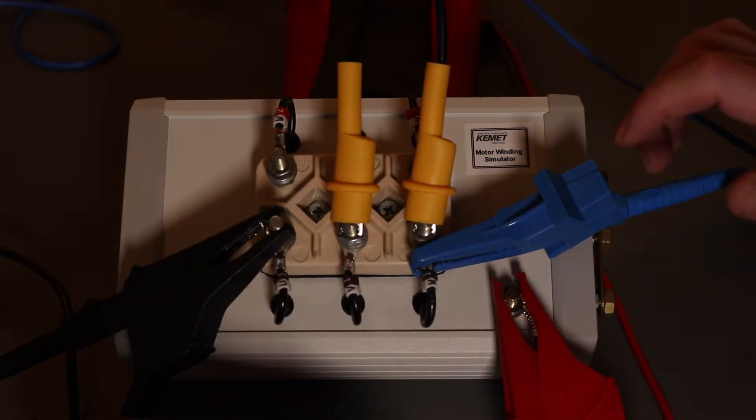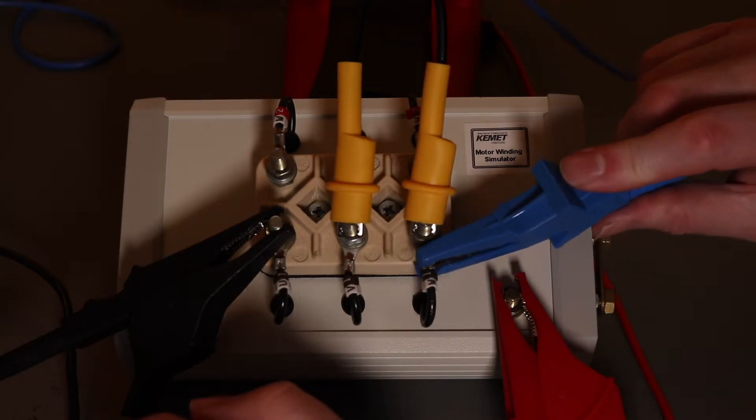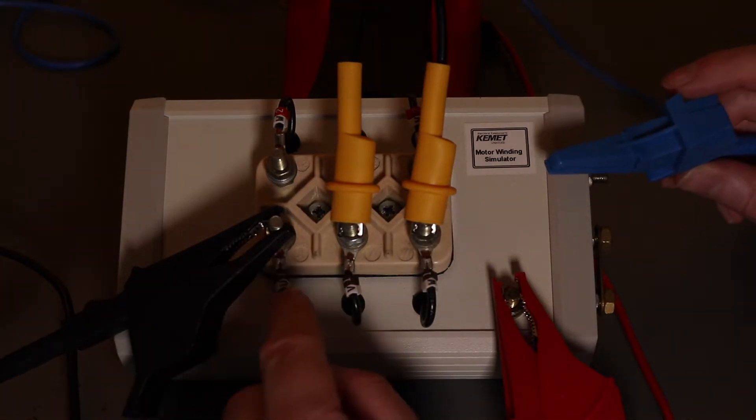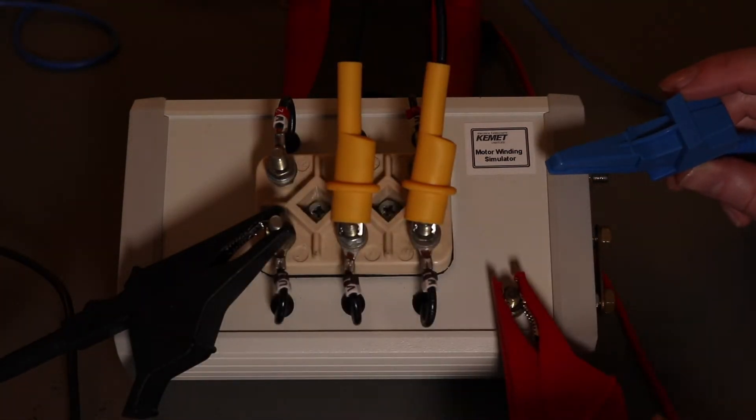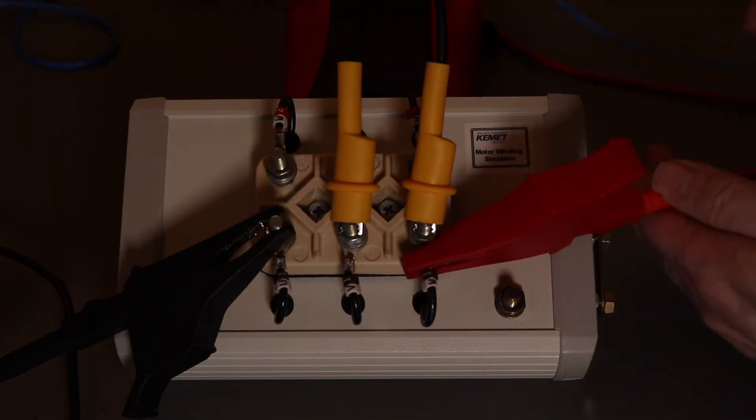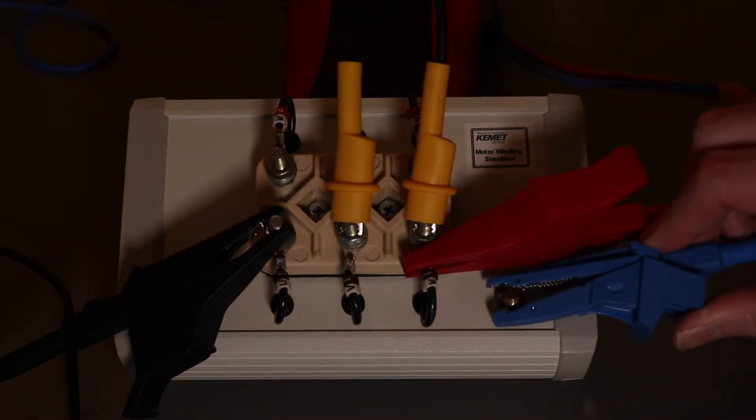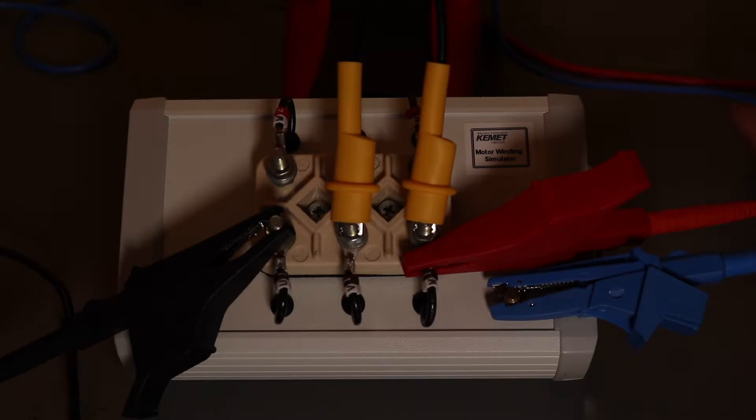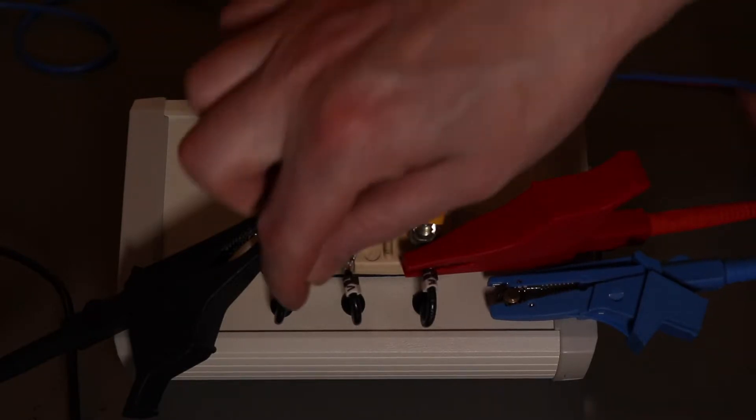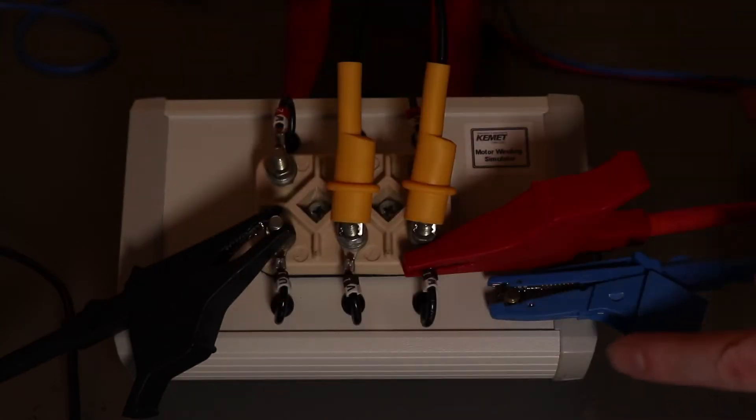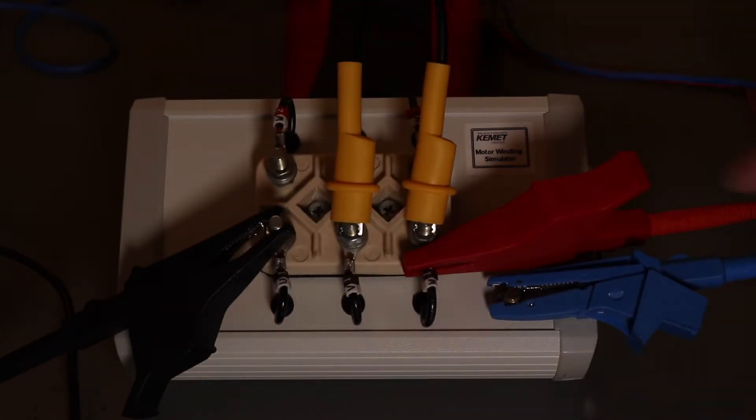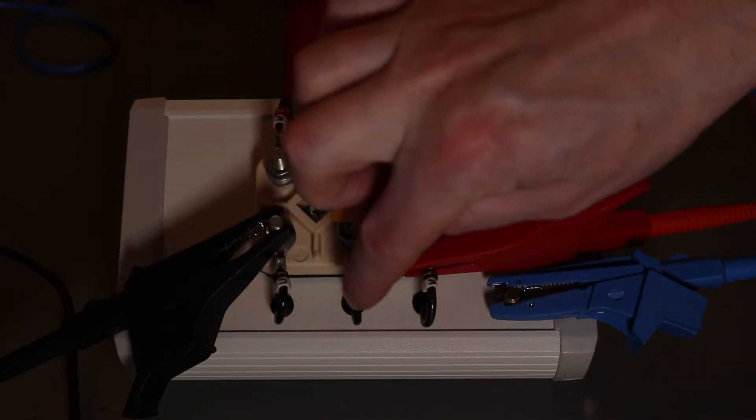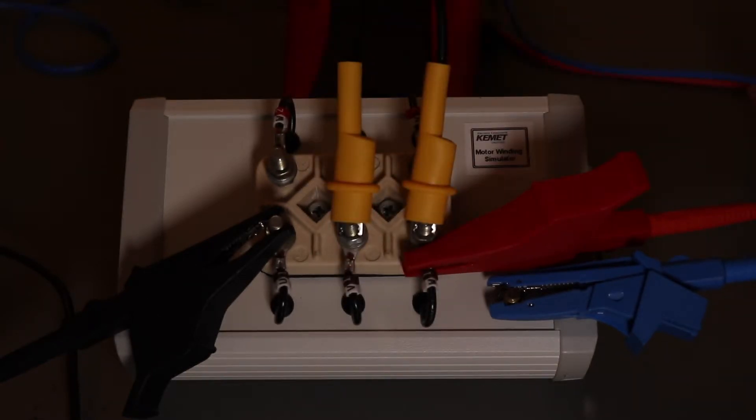I can reverse that. If I wanted to get a leakage reading of this phase into the other two phases, I can do the insulation test off of there and clip the guard terminal onto the chassis earth. Then any reading from this phase that goes down to the chassis is taken from the result and I just get the reading of this phase into either of these two phases.